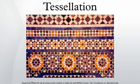Tessellations are sometimes employed for decorative effect in quilting. Tessellations form a class of patterns in nature, for example in the arrays of hexagonal cells found in honeycombs. In computer graphics, the term tessellation is used to describe the organization of information needed to render the surfaces of realistic three-dimensional objects.